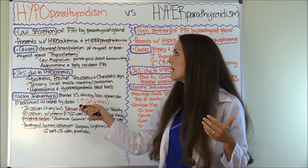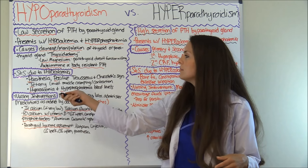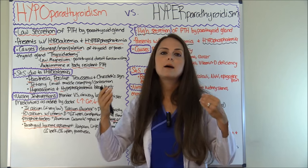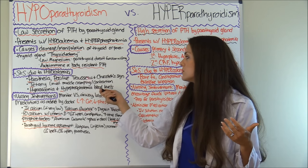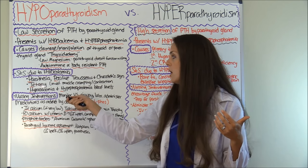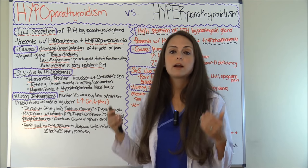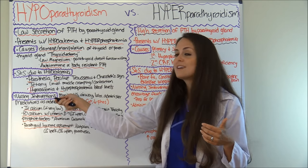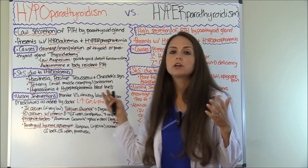For hypoparathyroidism, I like to remember the mnemonic PTH for parathyroid hormone. P — paresthesia, that tingly numbness on the lips, fingers, and toes. They may have a positive Trousseau sign or Chvostek sign. T — tetany, where you're having involuntary muscle contraction or cramping. This definitely puts their airway at risk because they can have bronchospasms. Their labs are also going to show hypocalcemia and hyperphosphatemia, so you want to monitor those.